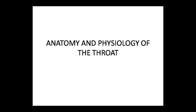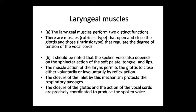Good morning class. This is our anatomy and physiology class in which today we will study the remaining topic of the throat. In our previous class we started the topic of the throat. The remaining part contains the laryngeal muscles. These muscles are extrinsic and intrinsic type. The extrinsic type muscles open the glottis and are closed, while the intrinsic type muscles regulate the vocal cord tension degree.